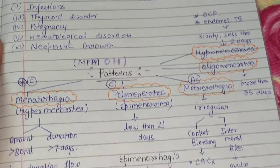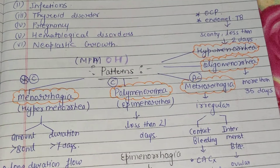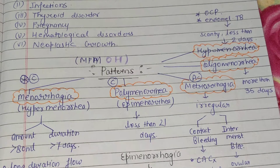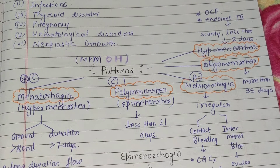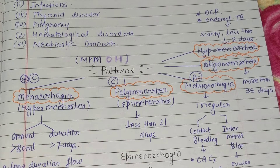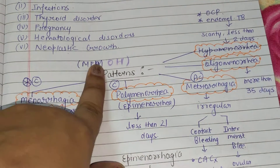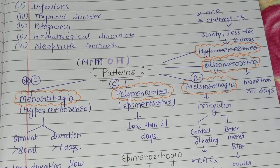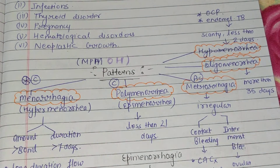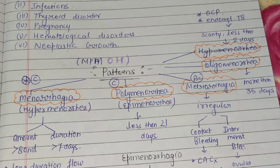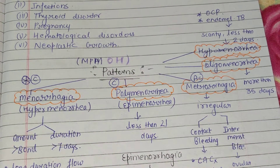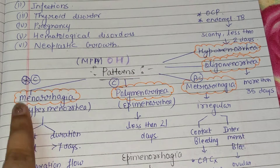Next, what are the patterns? This is very important, so remember their names. Remember the name MPMOH — M, P, M, O, H. The first M stands for Menorrhagia.